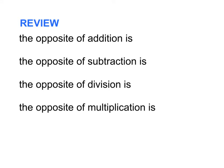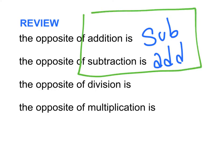Let's do some review. We've been talking about inverse operations as a way to cancel out specific numbers. The opposite of addition is subtraction. The opposite of subtraction is addition. If you need to cancel out a number — get rid of it — and it's being added, you're going to subtract it. And if it's being subtracted, you're going to add. The opposite of division is multiplication, and the opposite of multiplication is division.